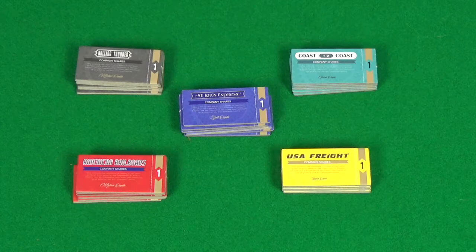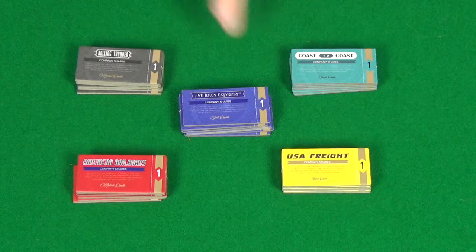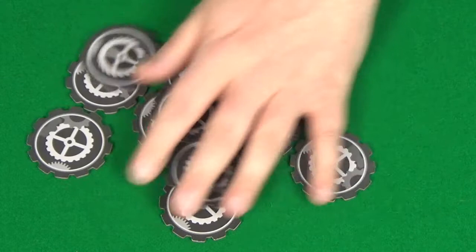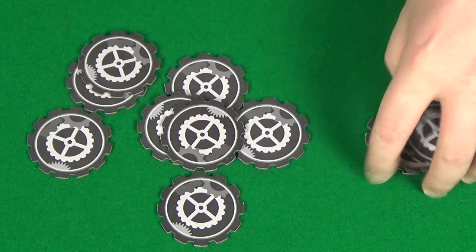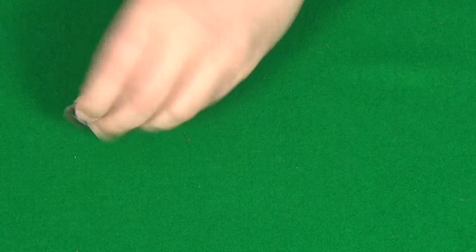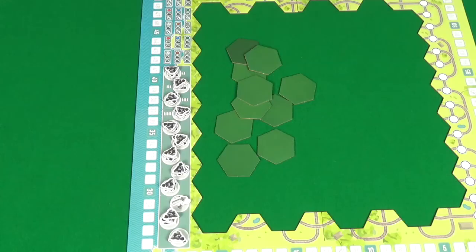You'll then need to create separate stacks for each of the different colors of shares so that they go from six at the bottom to one on the top. Then shuffle up all these upgrade cards here and randomly pick out two more than the number of players. The rest you'll return to the box. The ones you've picked out, you'll flip face up and place near the game board.